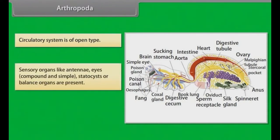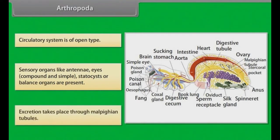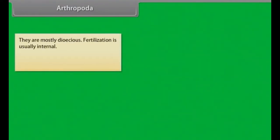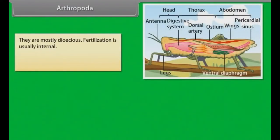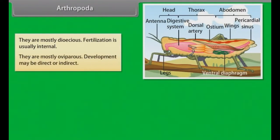Sensory organs like antennae, eyes (compound and simple), and statocyst or balance organs are present. Excretion takes place through Malpighian tubules. They are mostly dioecious. Fertilization is usually internal and they are mostly oviparous. Development may be direct or indirect.